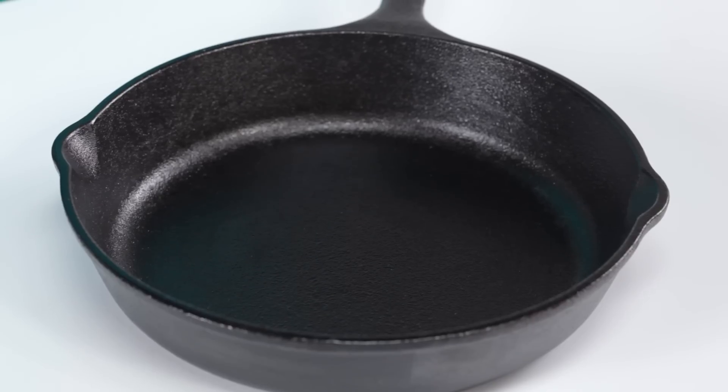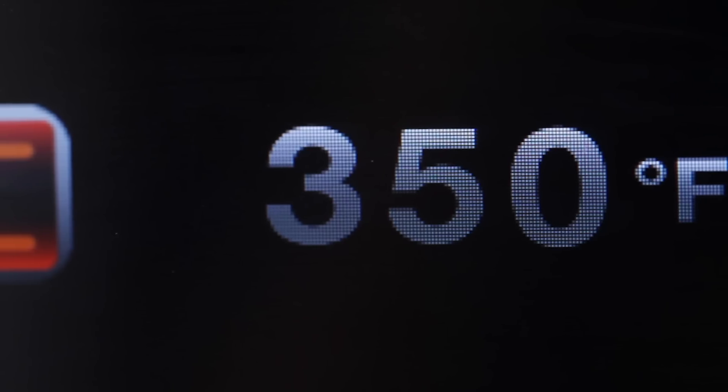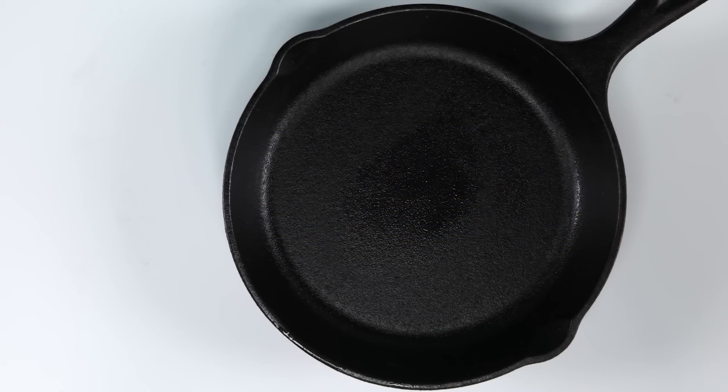from the oven and let it cool. Repeat this process three times, oiling and cooking the pan each time, for a well-seasoned skillet.